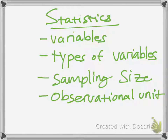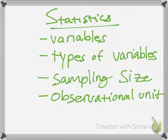So let's just jump right to it. An observational unit is the thing that is measured, the sampling size is how much, the types of variables can range in multiple categories — we'll get into that later — and variables are the things that change in the experiment.